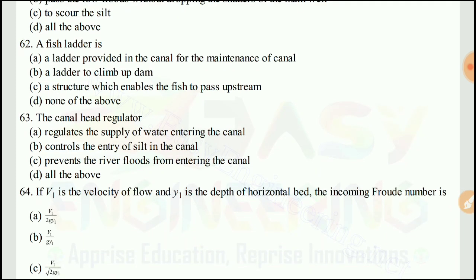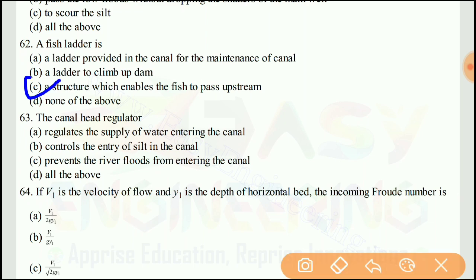Question 62: A fish ladder is — the right answer would be C, a structure which enables fish to pass upstream.